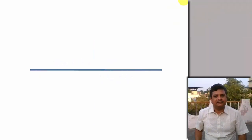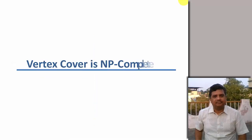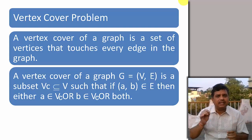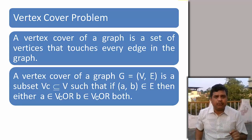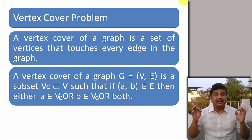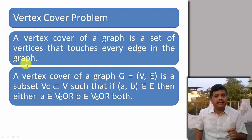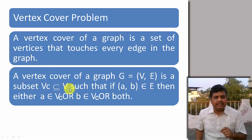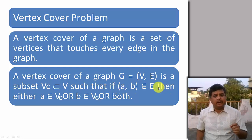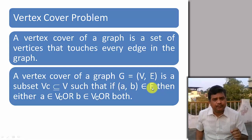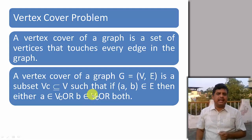So let us start NP completeness of the Vertex Cover problem. Let us first try to understand what is a vertex cover problem. A vertex cover of a graph is a set of vertices that touches every edge in the graph. It means if a graph is given, represented in the form of a set of vertices and a set of edges, then I will take a subset VC — a subset or equal to the set of vertices — such that if edge AB belongs to E, then either A belongs to VC or B belongs to VC, or both A and B belong to VC.